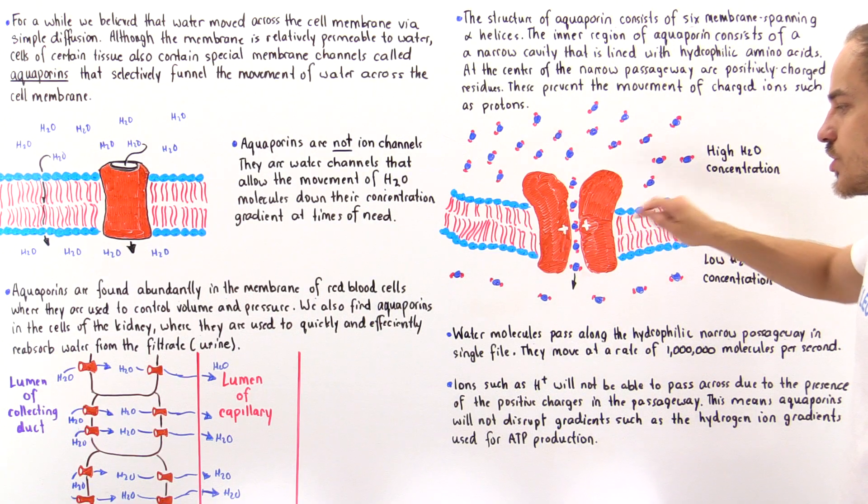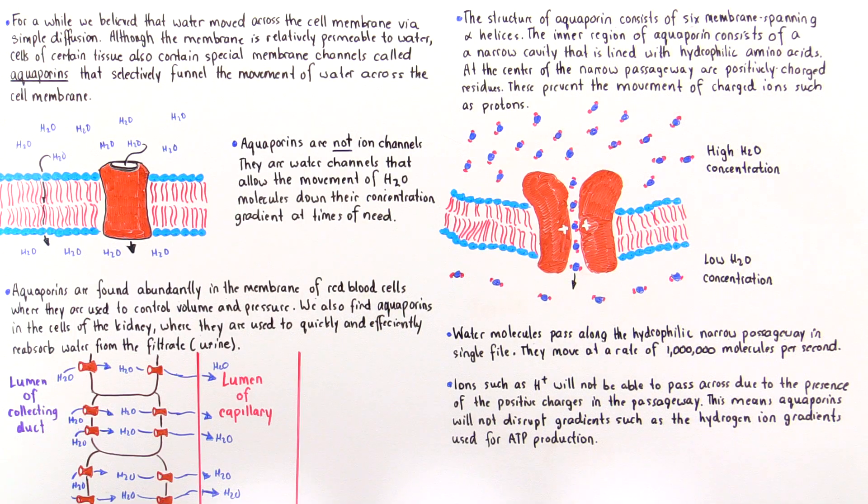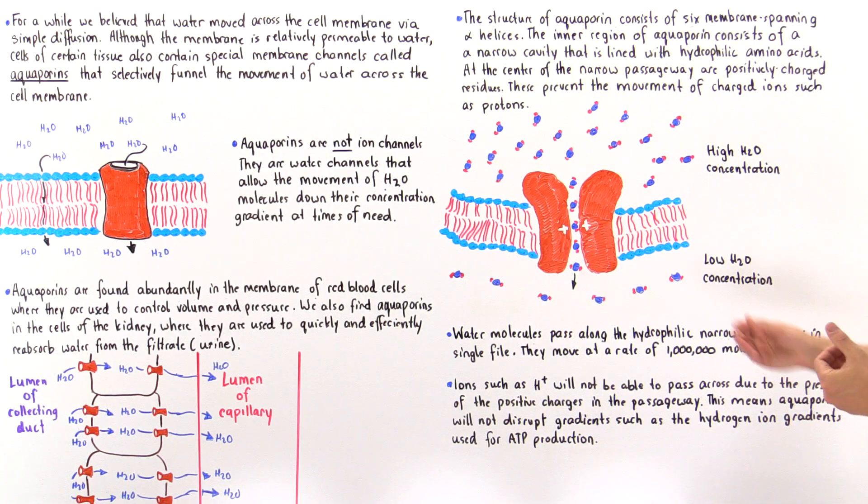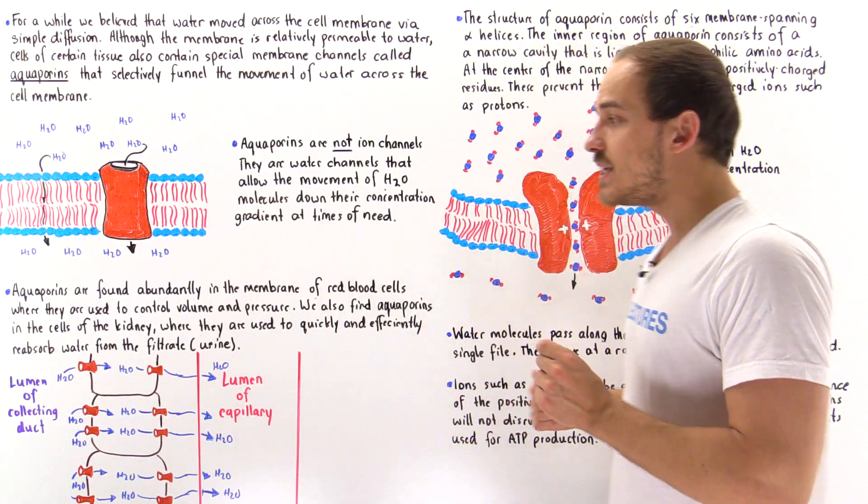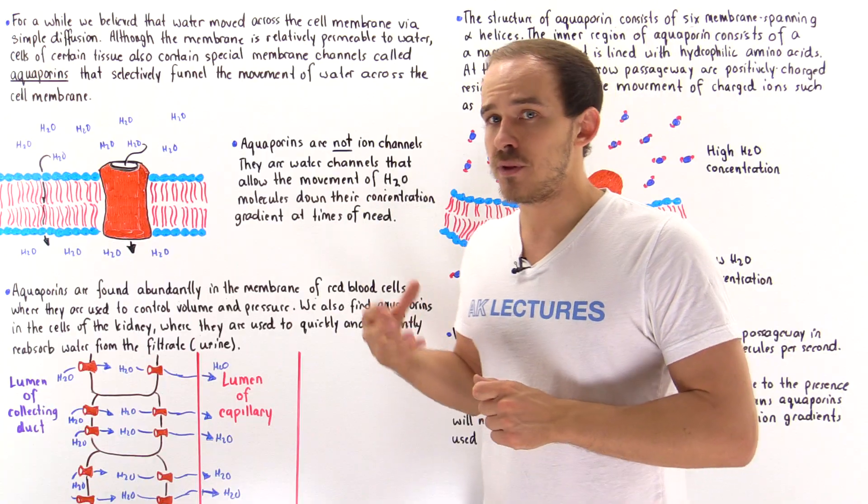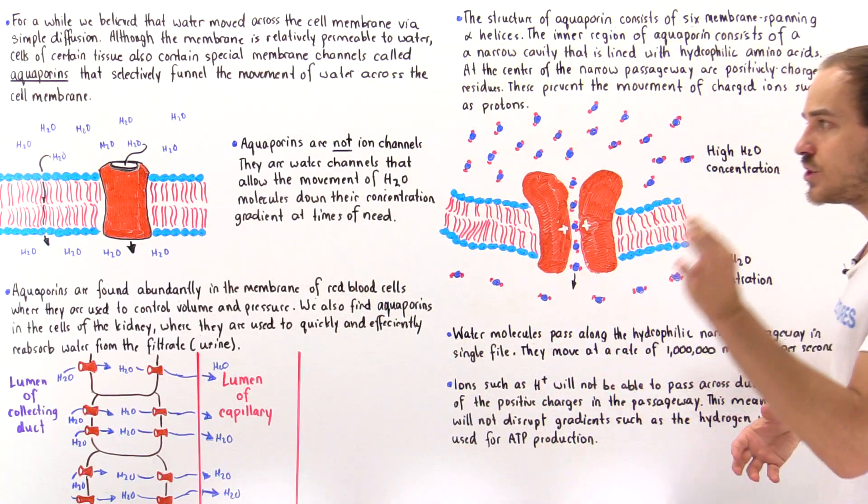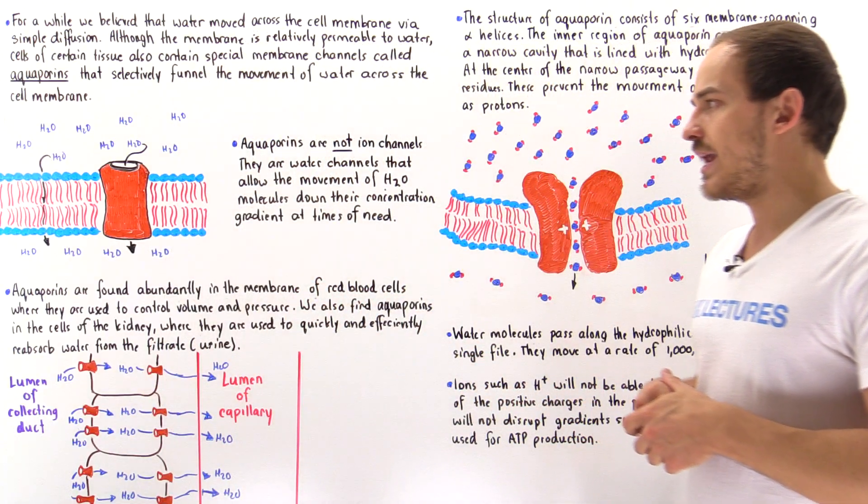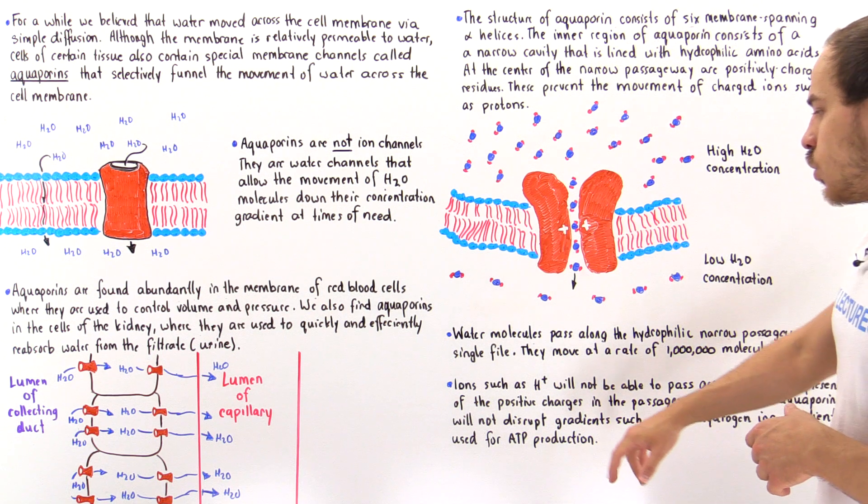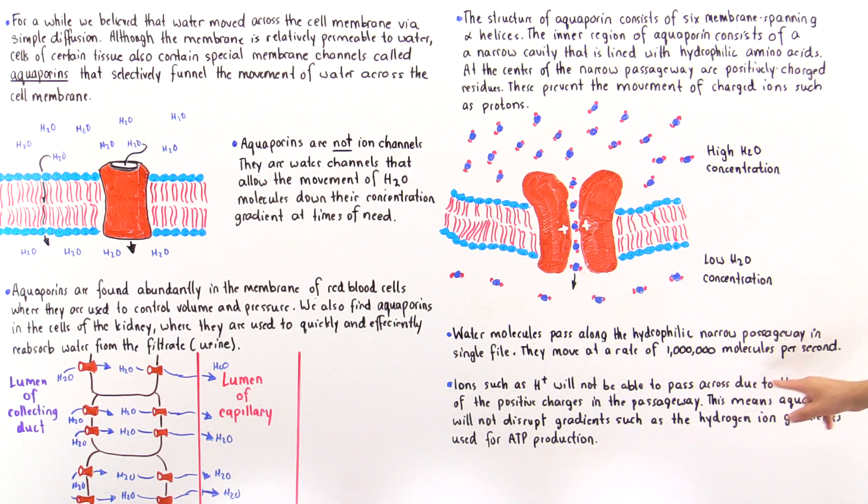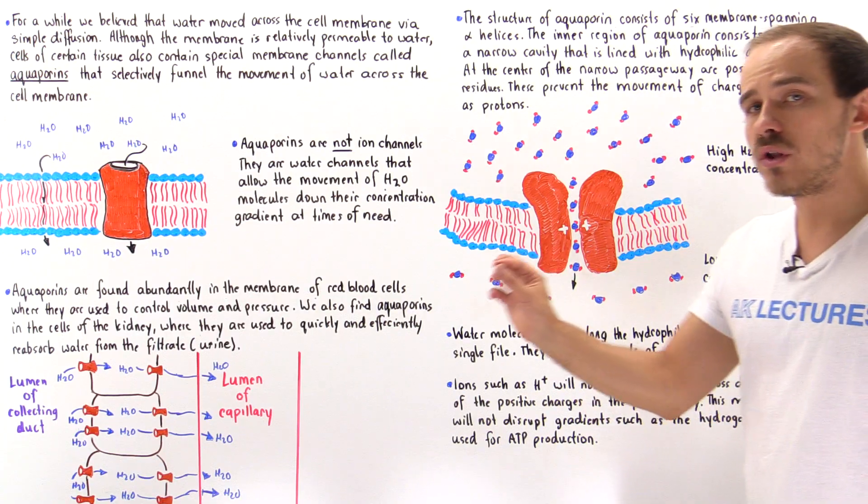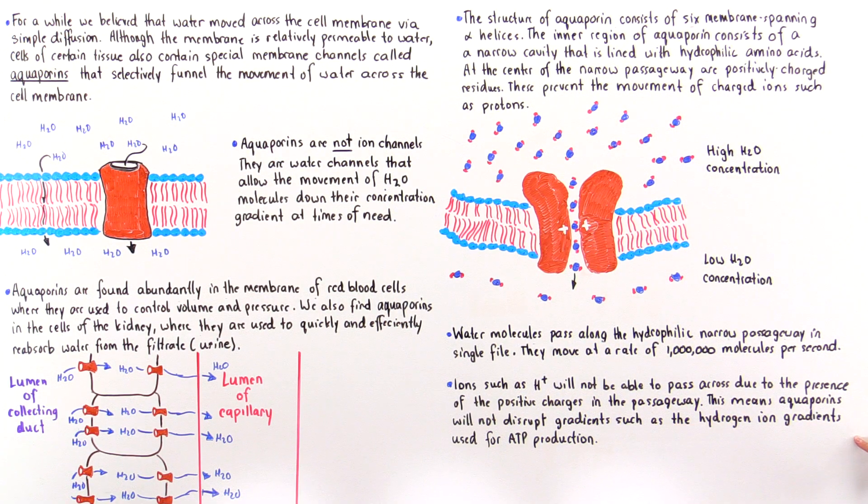What about these positive charges? As a result of the presence of these positive charges at the center of that passageway, ions, for instance hydronium ions or protons, will not be able to make their way across this channel. That's important because if these channels somehow were able to actually allow the movement of H plus ions, what that would do is it would disrupt the hydrogen ion gradients within our cells. Those gradients are important because as we'll see in a future lecture, we use these proton gradients to actually create ATP molecules. We see that ions such as H plus ions will not be able to pass across due to the presence of the positive charges in that passageway at the center as shown here. This means that aquaporins will not actually disrupt gradients such as the proton gradients that exist inside our cells which are used to produce things like ATP molecules.